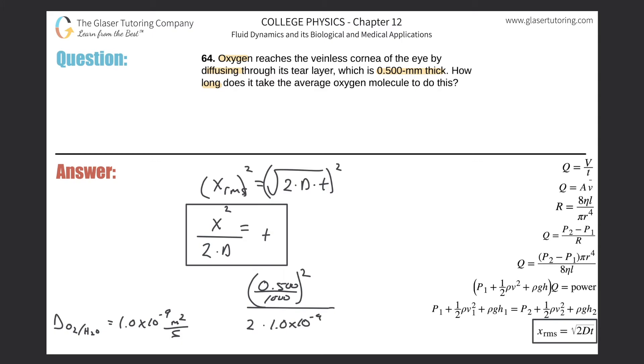And this will tell you the time. So let's do it: 0.5 divided by 1000 and then square that value, and then divide it by 2 times 1 times 10 to the minus 9, close those parentheses, and we get about 125.